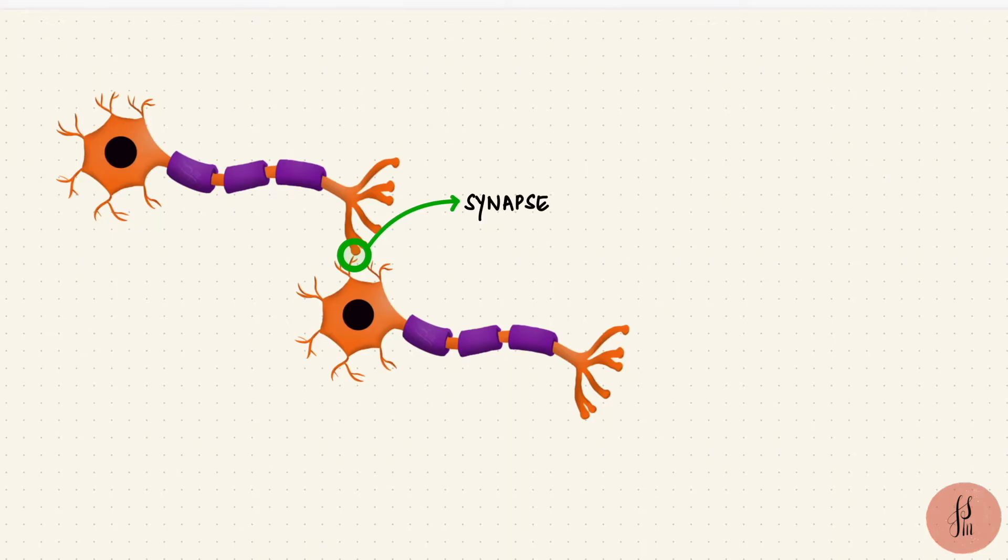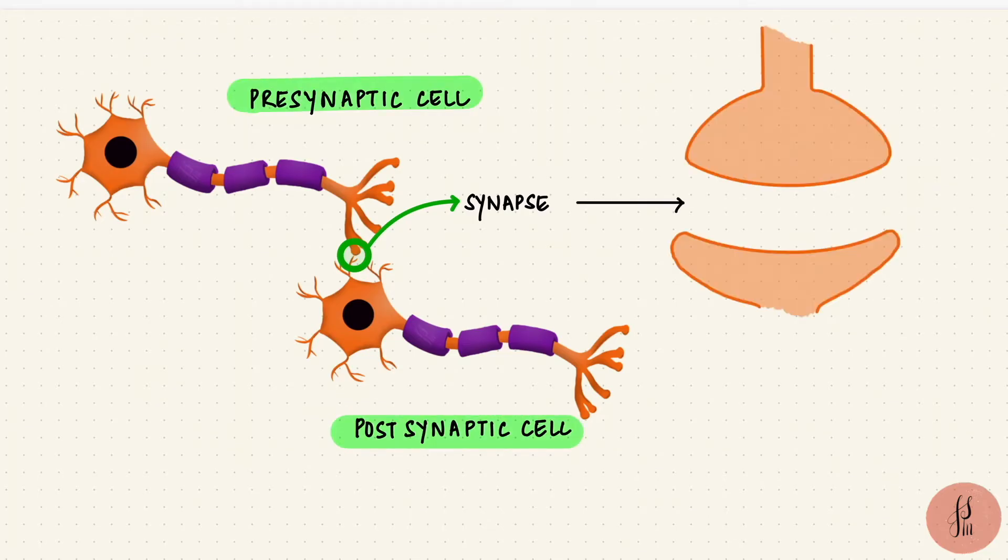Think of it like one cell talking to another. The one that's doing the talking is the pre-synaptic cell, and the one listening is the post-synaptic cell. There are different kinds of synapses in the body, but most of them are chemical synapses, which communicate using transmitters.